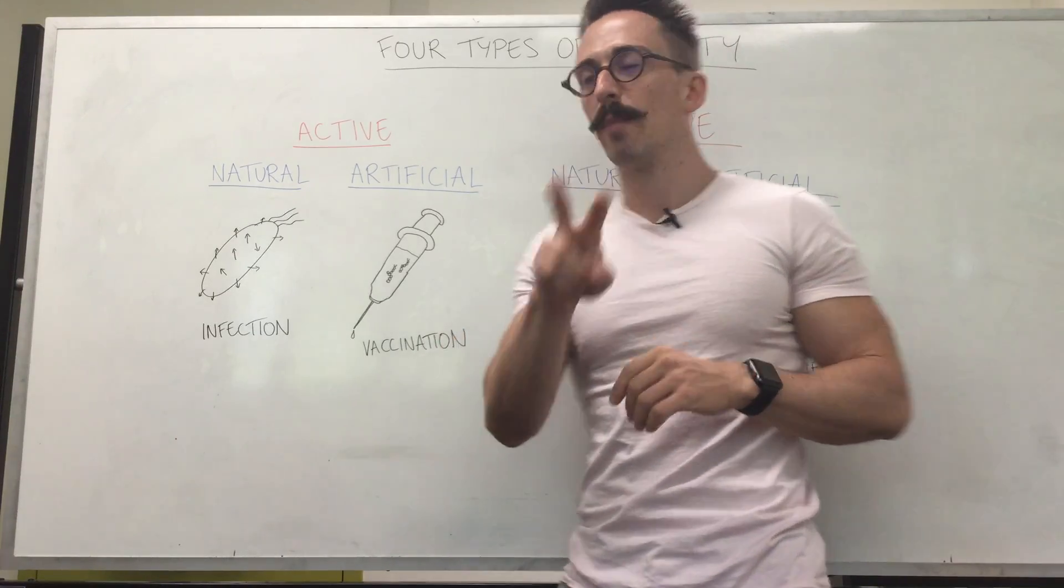Artificially acquired passive immunity is where these antibodies are already produced in another person or in another animal and you receive them either via blood plasma or via blood serum. This can happen for a number of different diseases.